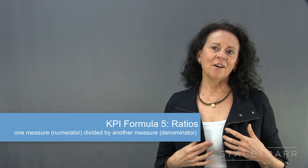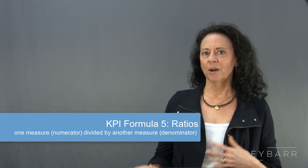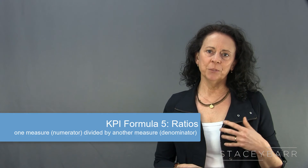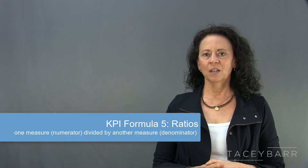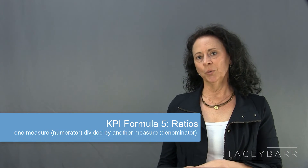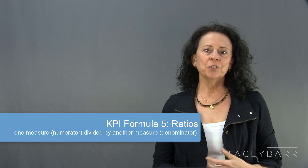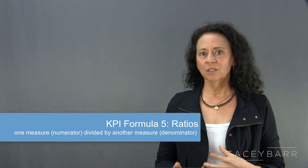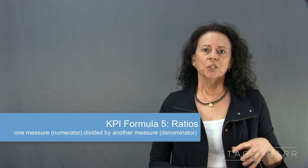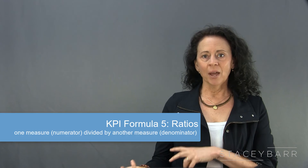Basic KPI formula number five is the ratio. Ratios divide one measure — the numerator — by another measure — the denominator. They're quite different to averages because the denominator isn't a count of a population; it's usually another measure of the same population. For example: total sales revenue received divided by total sales revenue invoiced, total sales revenue divided by total hours spent on sales calls that generated that revenue, or total freight tons delivered divided by the total distance that it was transported. Ratios are a great way to measure productivity — the numerator is your output and the denominator is your input. Keep in mind, though, that it's very easy to make your KPIs unnecessarily complex when you use ratios, so make sure they tell you something really sensible.